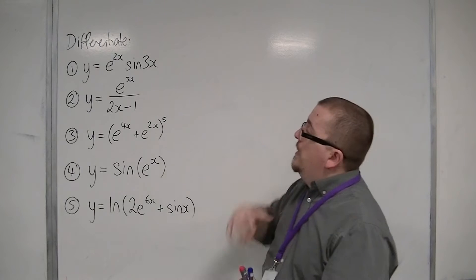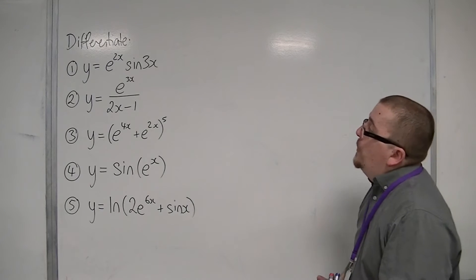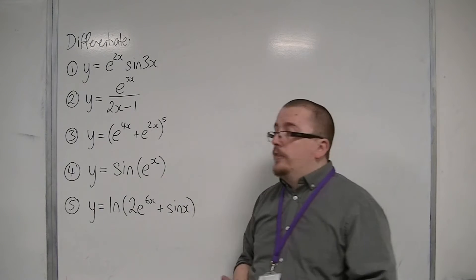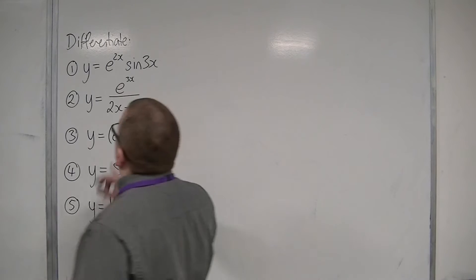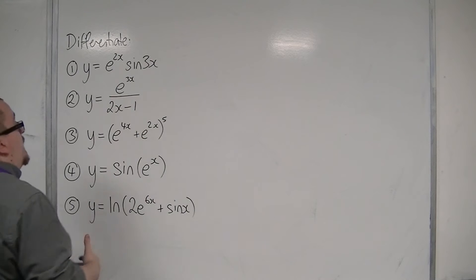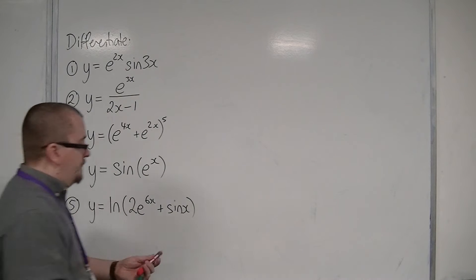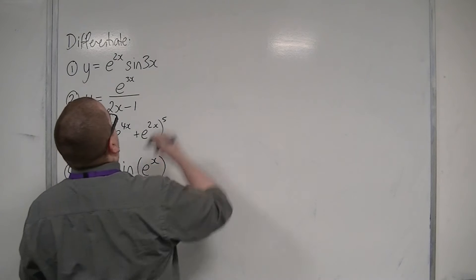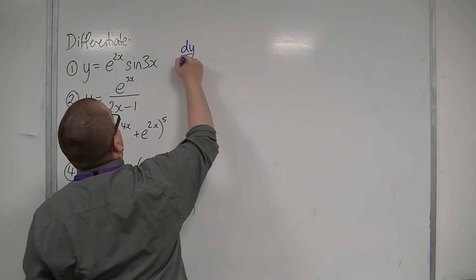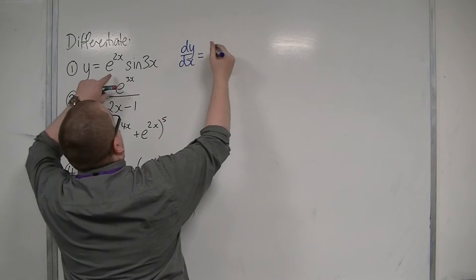So let's look at number one: y is equal to e to the 2x times sine 3x. Because we have a function of x times a function of x, we're going to use the product rule.